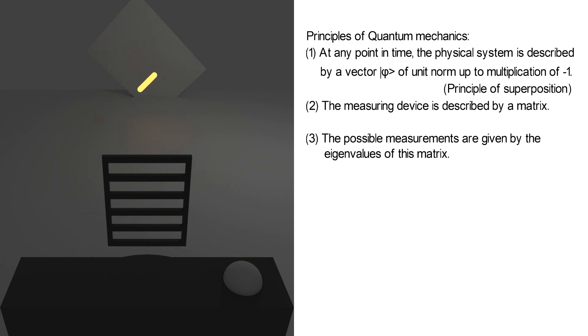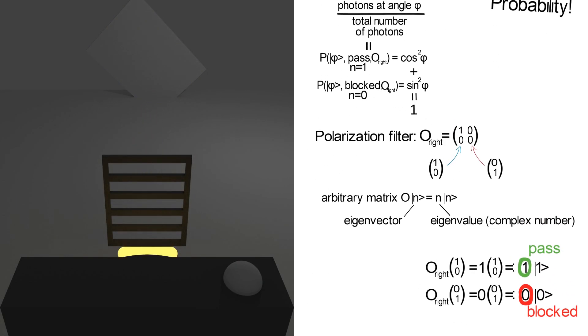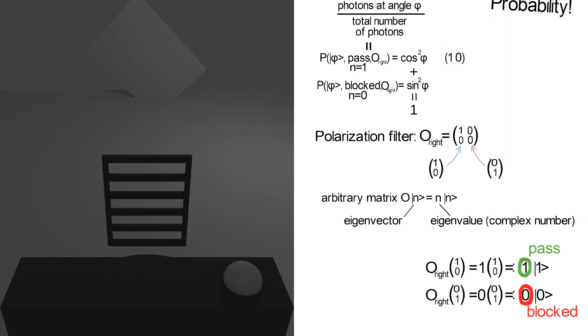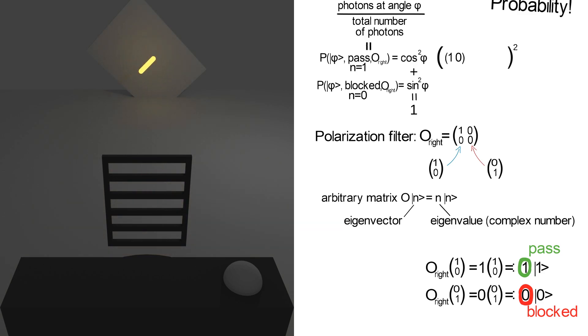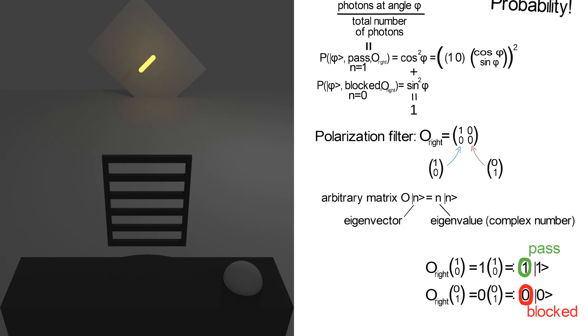But there is even more quantum mechanics in the formalism of eigenvectors and eigenvalues. For this, let's look at the probabilities again. Passing the filter is described by eigenvalue n equals 1. Reminding ourselves that the corresponding eigenvector is 1 0, we see that the probability of cosine squared phi is the square of the inner product of this eigenvector 1 with the state vector phi, which was cosine phi sine phi. In Paul Dirac's notation, this is written as 1 phi squared.